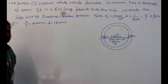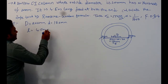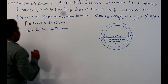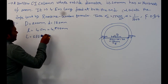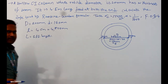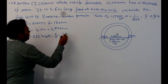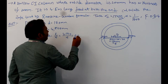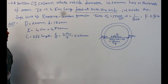The length of the column is given as capital L equal to 4.5 meters, that is 4500 mm. Now, to calculate the effective length: both ends are fixed, so we use the formula capital L_e equal to small l divided by 2, which gives 4500 by 2 equal to 2250 mm.